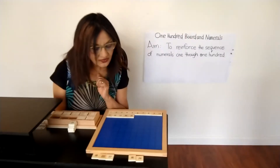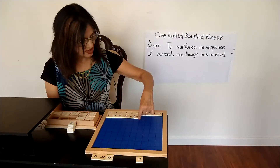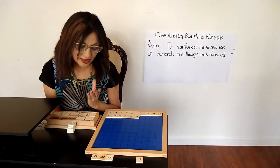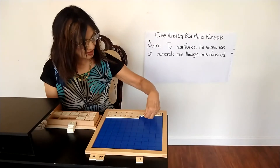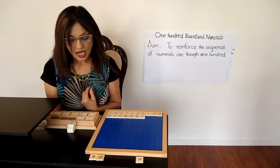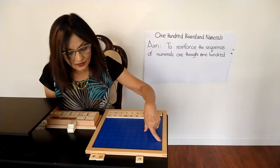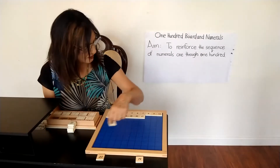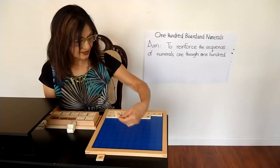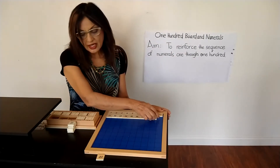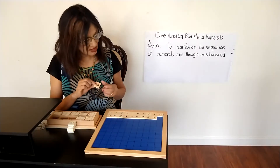Let's find where 16 is — right here. I'm looking for what number? 17. Here is 17. 18 — I'm looking for 18. Where is 18? Right here. 19. And what comes after 19? 20. 2 and 0.